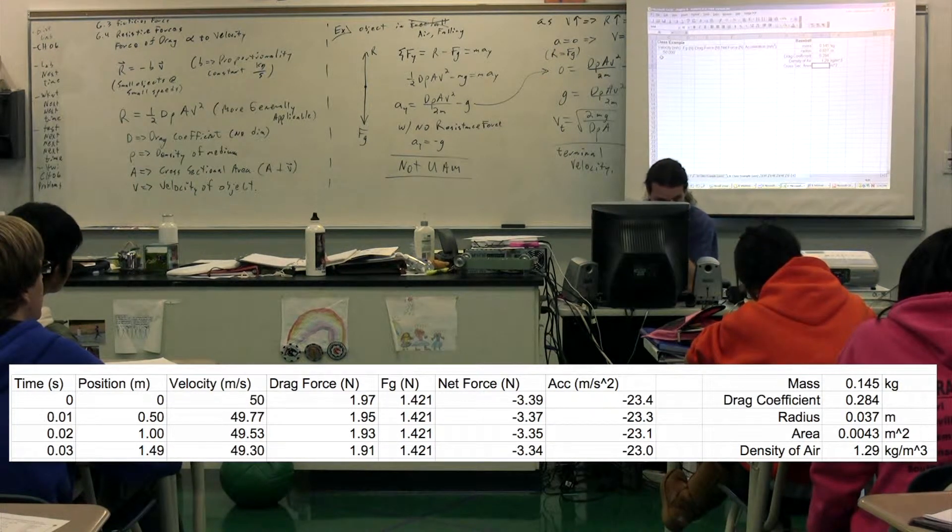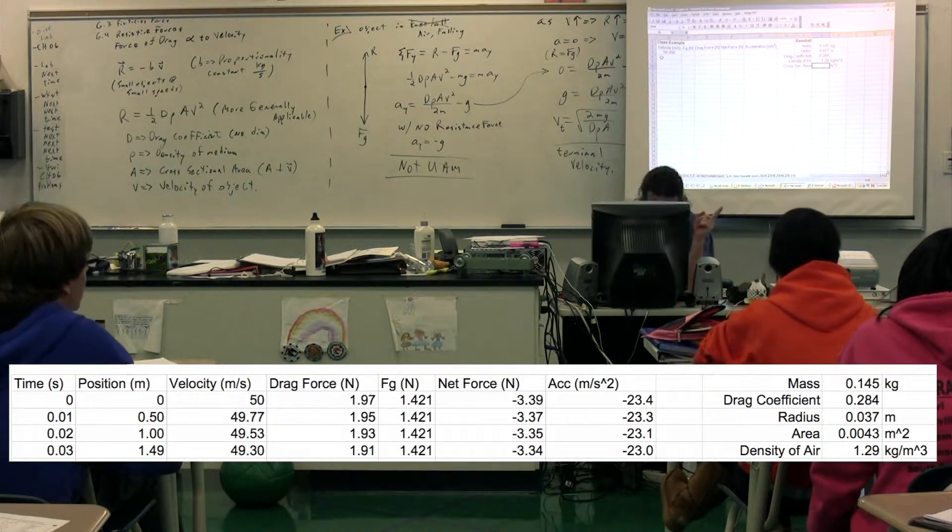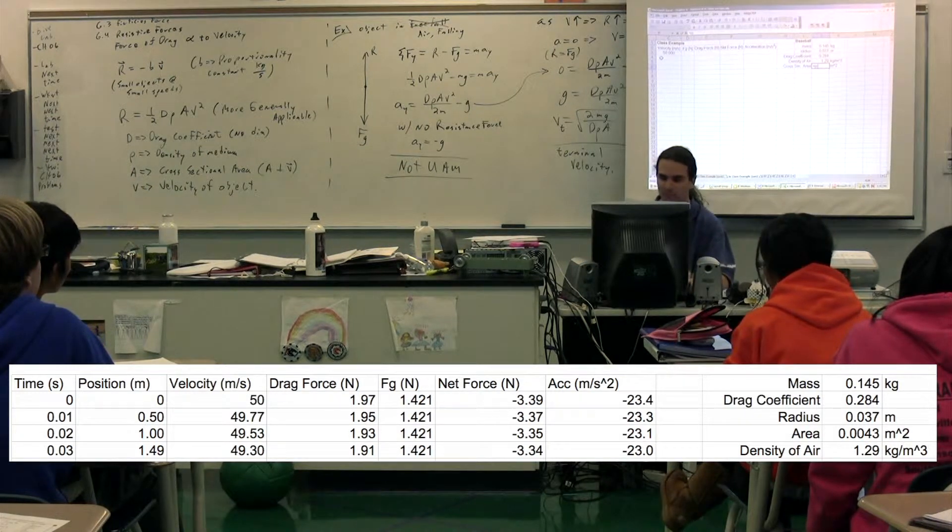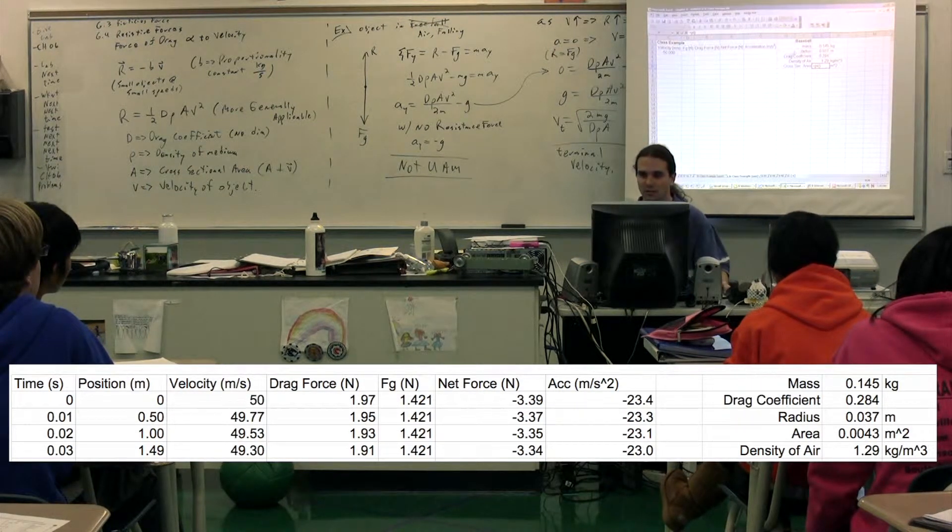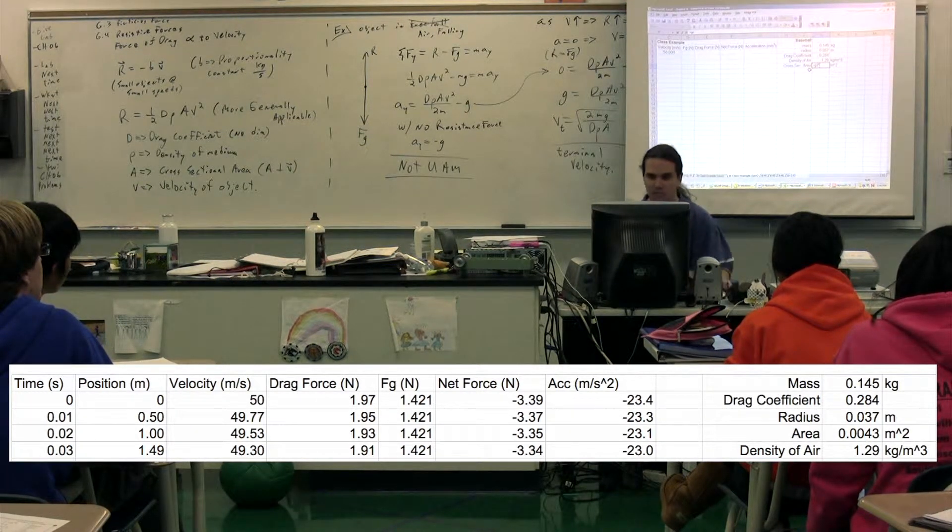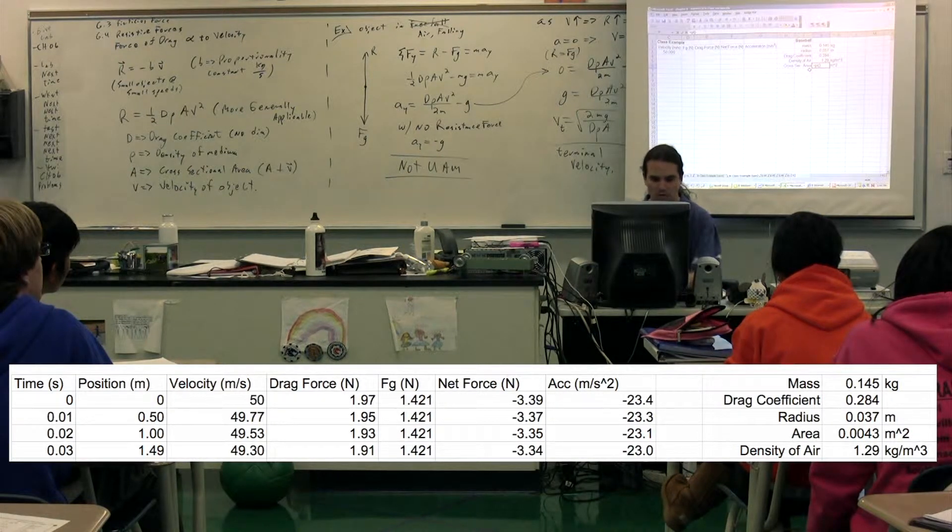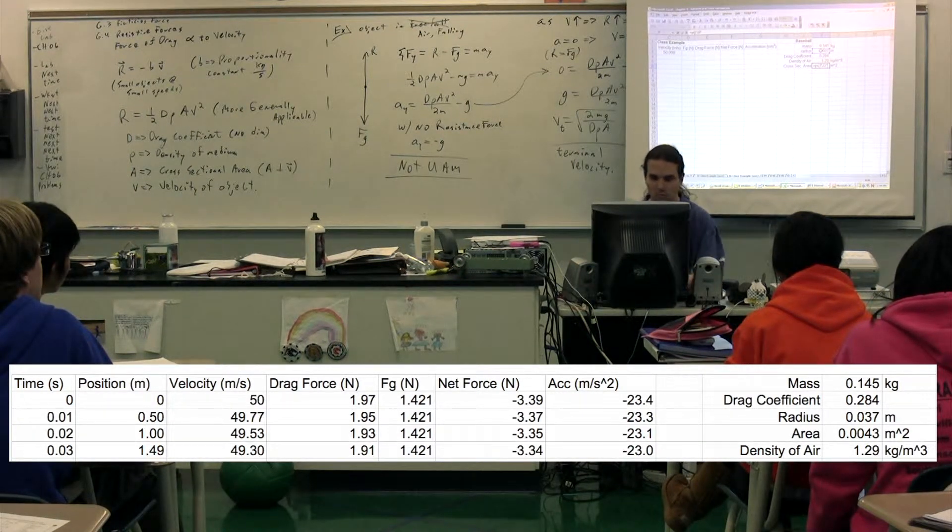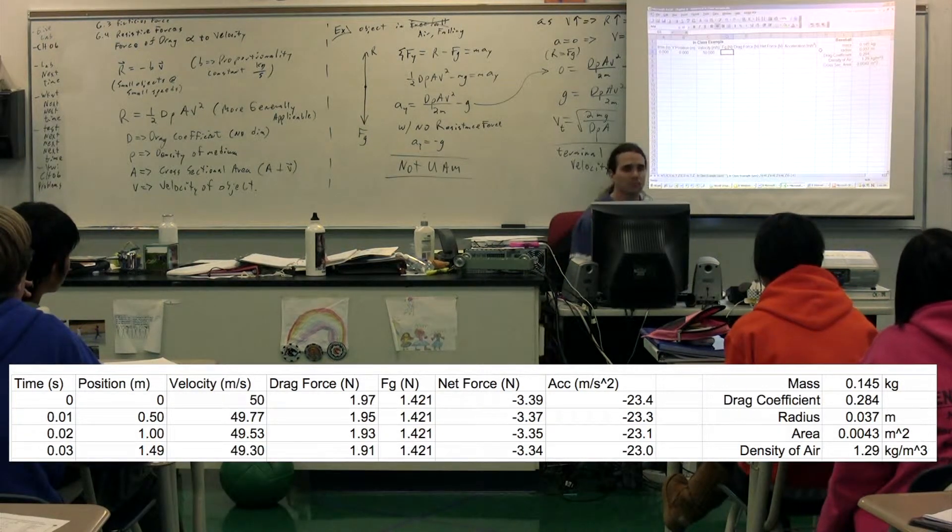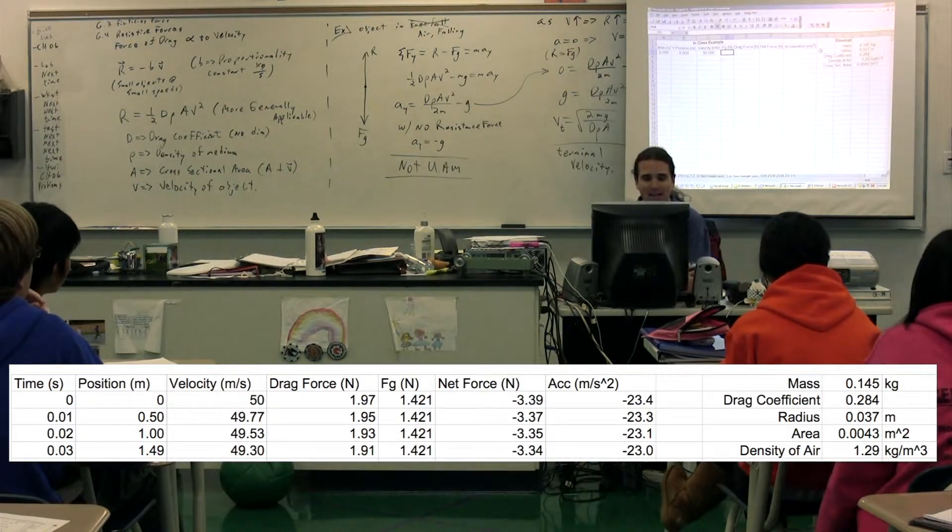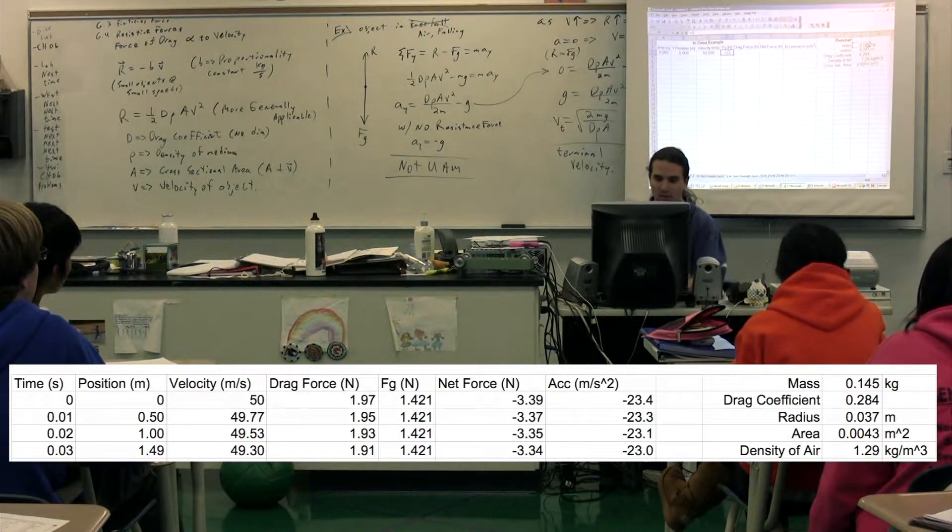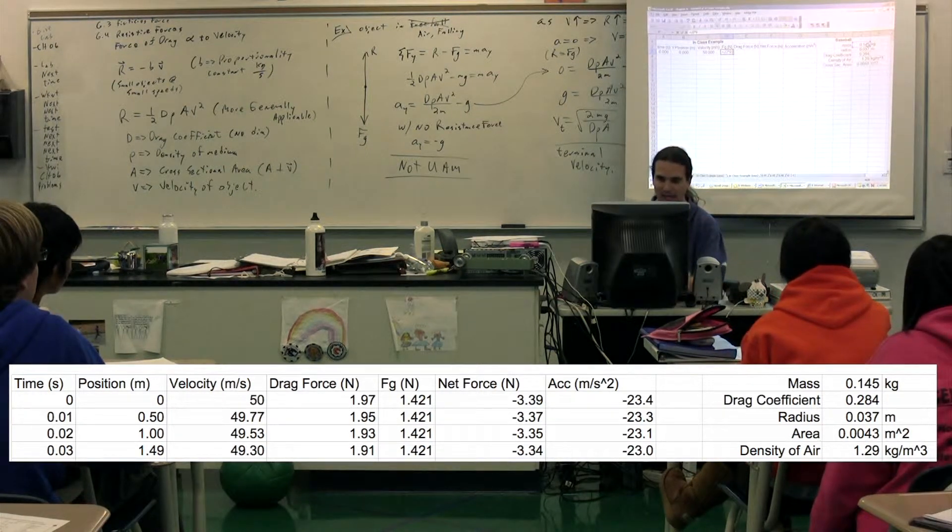The cross-sectional area. Remind me, class, what's the shape going to be? Circle. Therefore, the area is? Pi r squared. So, this is equal to pi times the radius quantity squared. So, we have the cross-sectional area. Now, the force of gravity. We just figured it out. The force of gravity is equal to mass times the acceleration. So, it's equal to the mass, which is this one, times the acceleration of gravity, times 9.8.